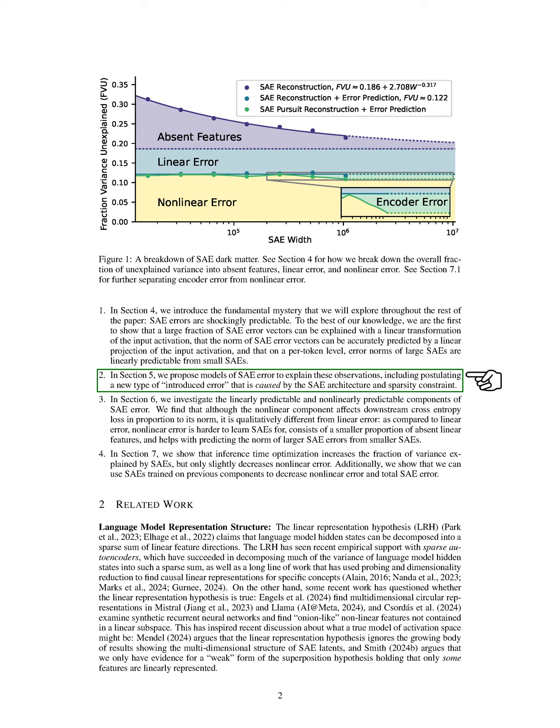In the next section, we propose models to explain these observations, including a new type of introduced error linked to the SAE architecture and its sparsity constraints. We then analyze both the linearly and non-linearly predictable components of SAE error. Our findings indicate that while the non-linear component influences downstream loss, it behaves differently from linear error, being more challenging for SAEs to learn and consisting of fewer absent linear features.